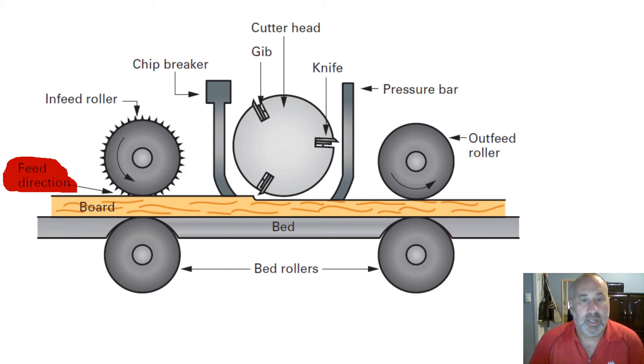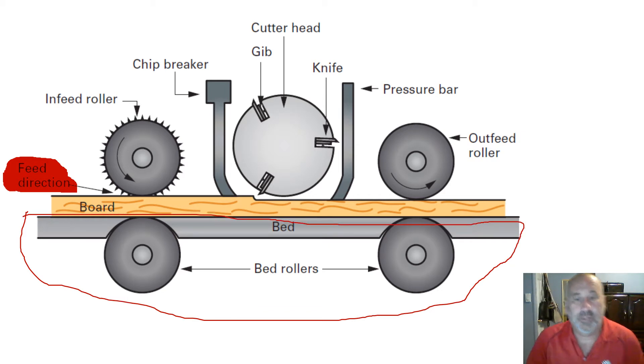Here we're looking at the setup of a stationary thickness planer. So looking at the bottom half here, the bed, this is the part of the stationary thickness planer that moves. It moves up and down to give you the thickness of the cut for your boards.